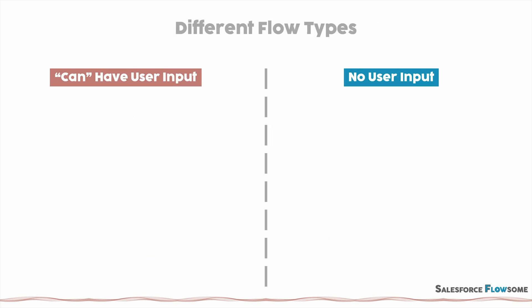In the second part, we want to talk about different types of flow. I separate them into two categories: one is can have user input, and the other is no user input. Can have user input means that you can have a screen for people to fill in some data — but notice I say can, because you don't have to have it. You just have the option to. So on the left side, we have our famous screen flow.